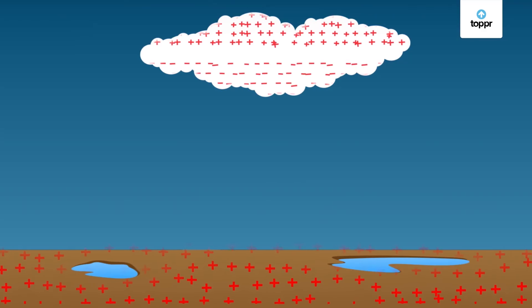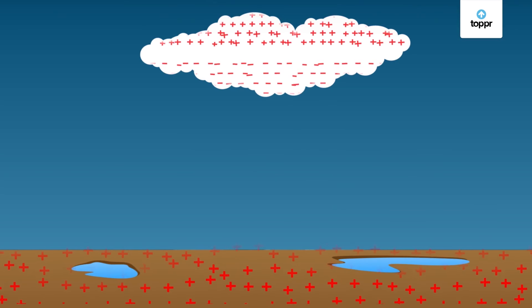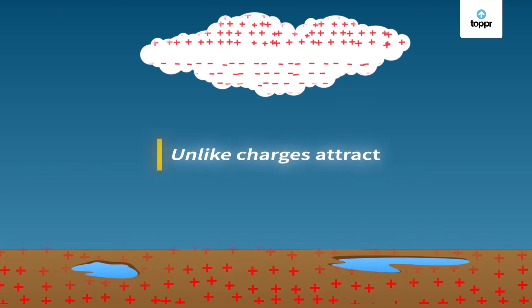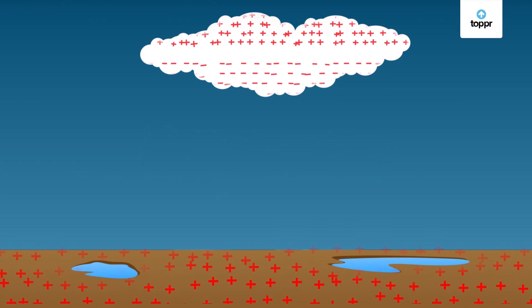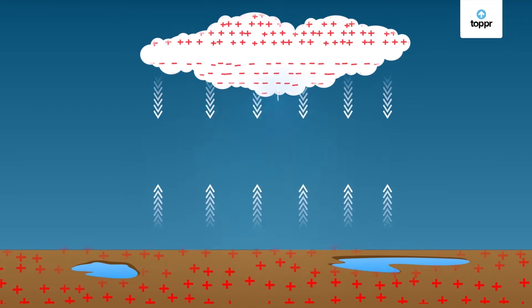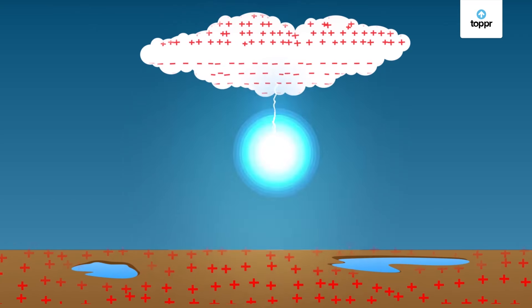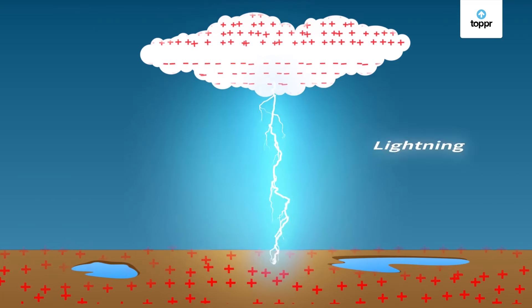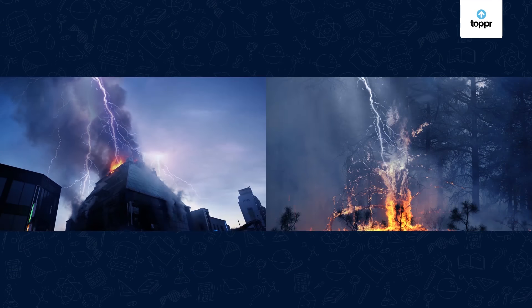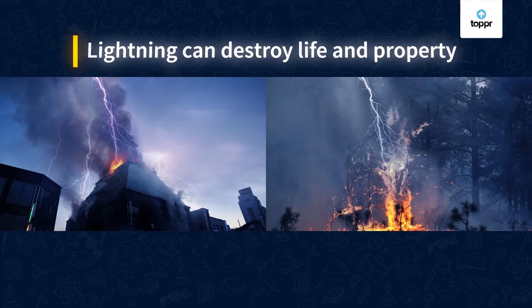This discharge may take place in between clouds or between the cloud and the earth. There is a negative charge in the cloud and the positive charge on the earth. As we know, unlike charges attract each other, so the negative and positive charges meet producing streaks of bright light and sound — we see the streaks as lightning. The charges accumulated get discharged to objects on the earth like buildings, trees, and even people. The huge charge may light a fire and destroy life and property.